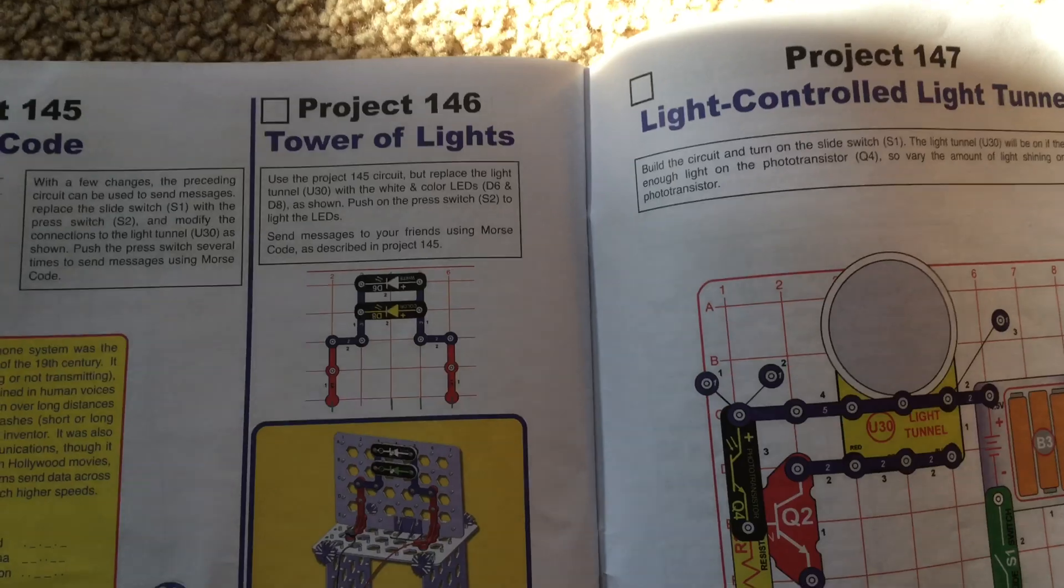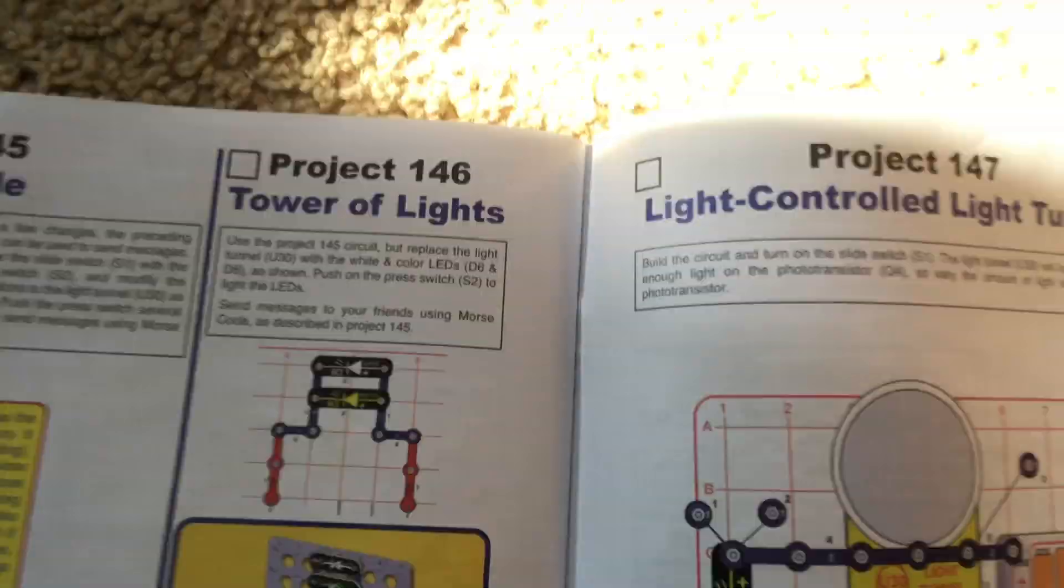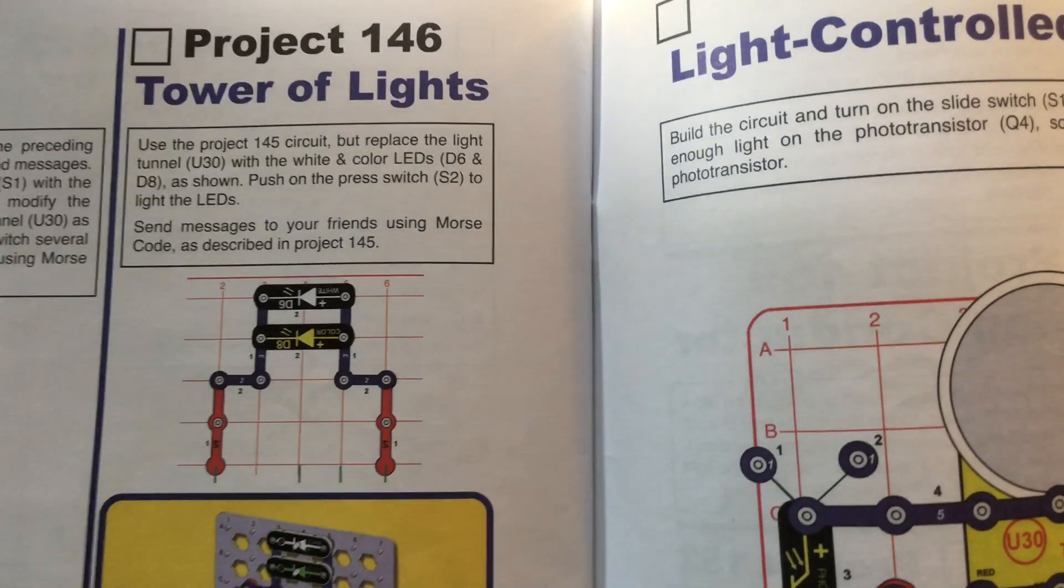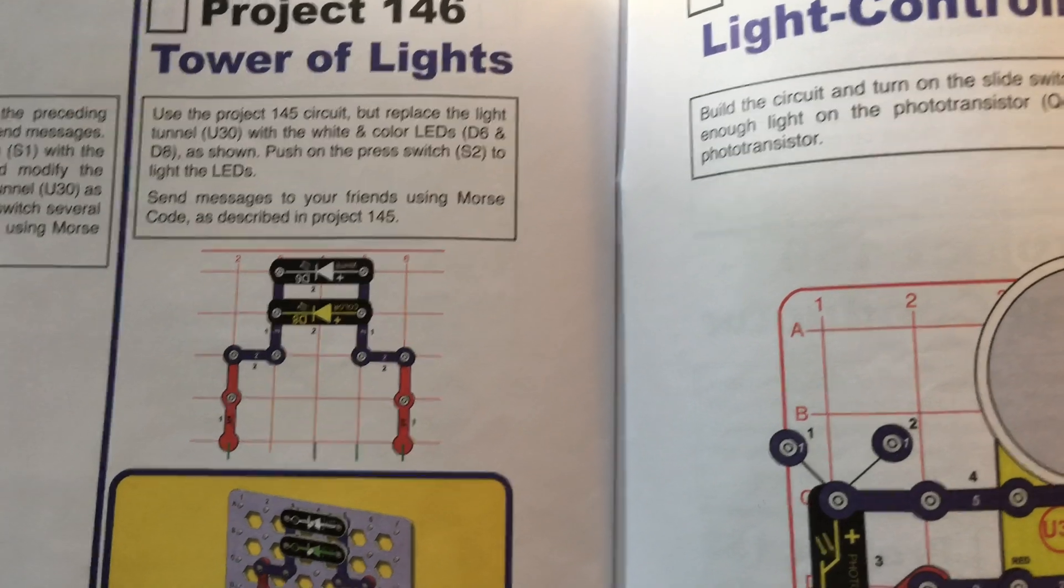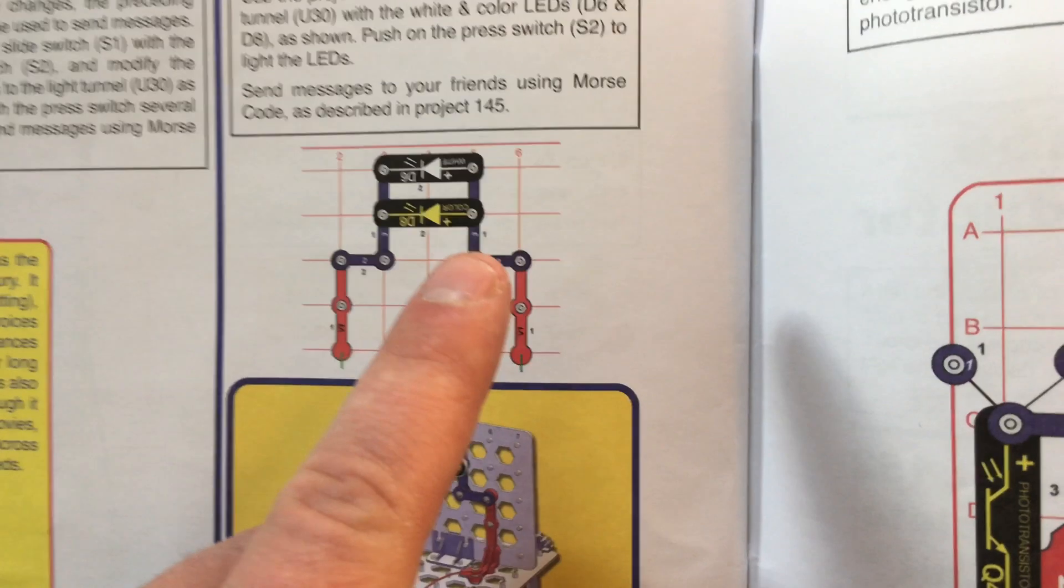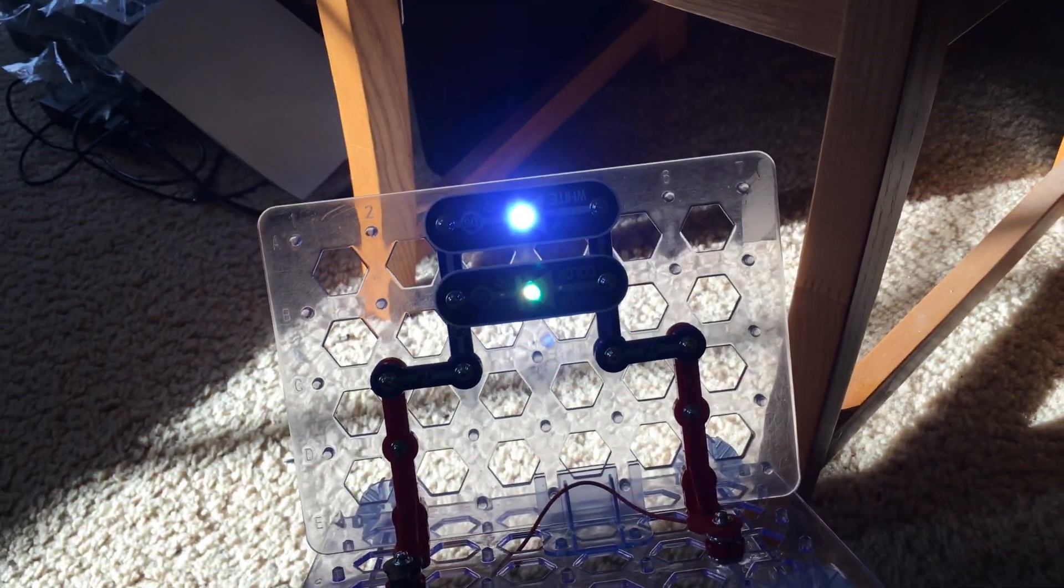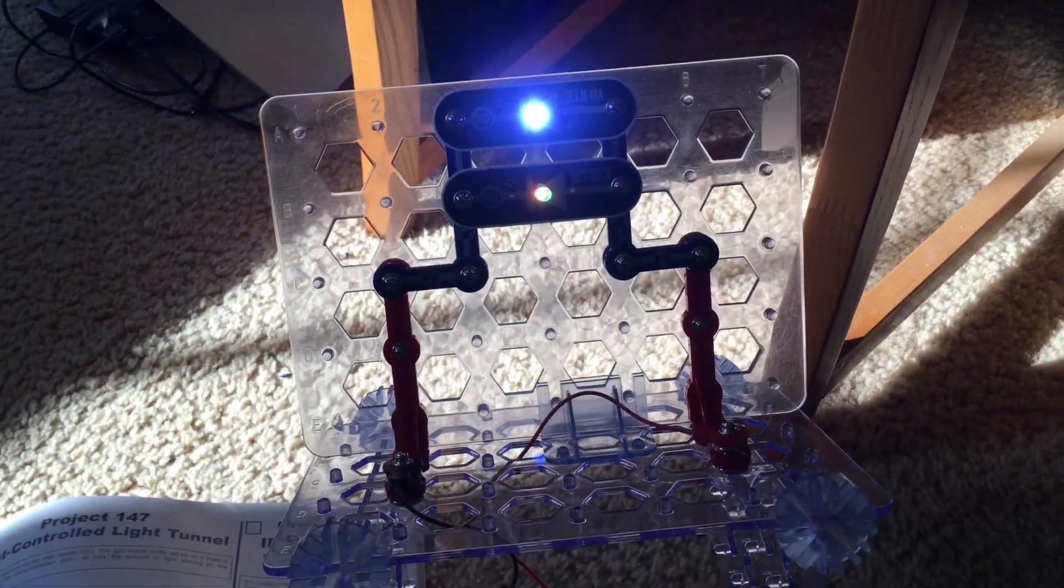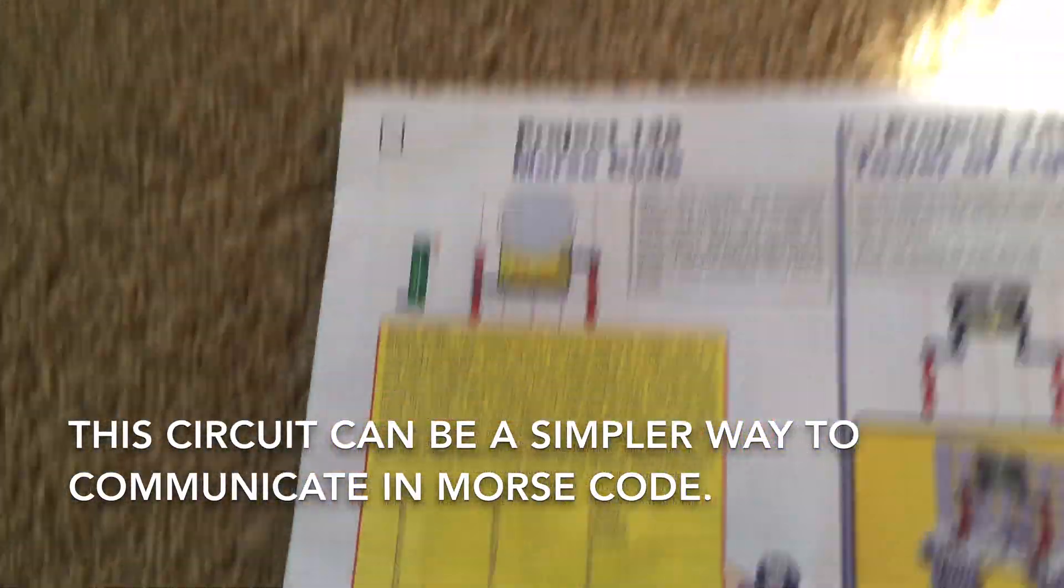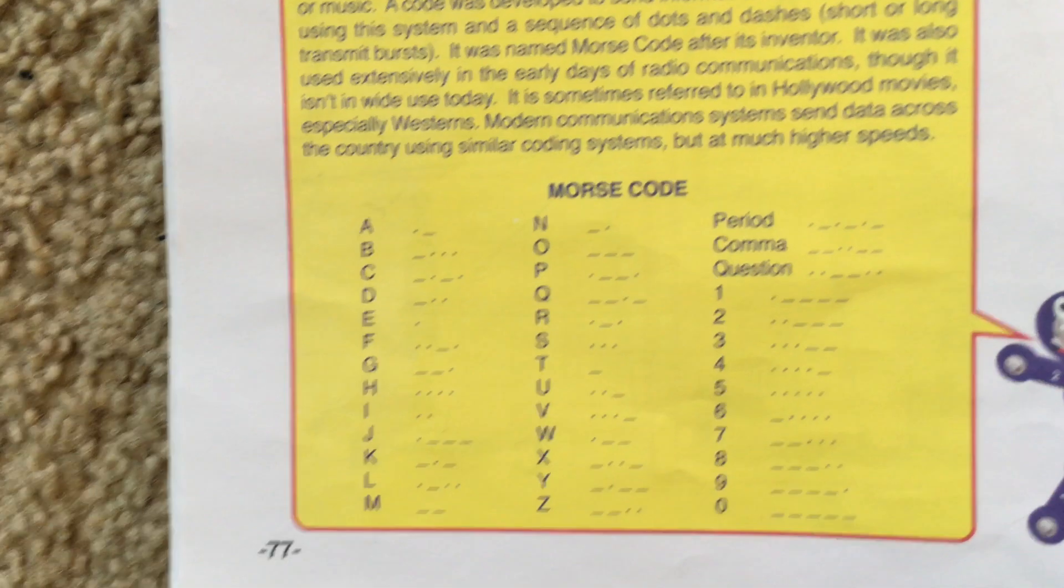Project 146, Tower of Lights. Modifying the Project 145 circuit, we will replace the light tunnel with the white and color LEDs and connect them to the circuit as shown in this diagram. We will leave the press switch attached, and whenever the press switch is held down, the white and color LEDs will light up.